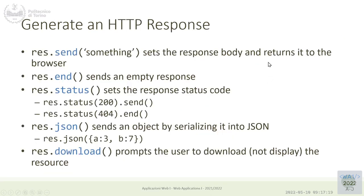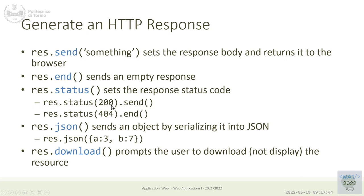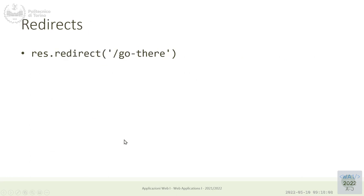The minimal commands for creating a response are: send (usually text or HTML), end (to close with no body), status to change the status code, and json to send a JSON-encoded object. res.json expects a JavaScript object and automatically serializes it; res.send expects a string. You can chain status before send or json to set the status code and then send the response.